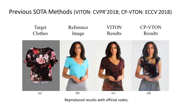This work focuses on image-based virtual try-on. Virtual try-on aims at transferring a target clothing image onto a reference person. Prior art usually focuses on preserving the characteristics of a clothing image when warping it to an arbitrary pose. However, it remains a big challenge to generate photorealistic try-on images when large occlusions and human poses are presented in the reference person.